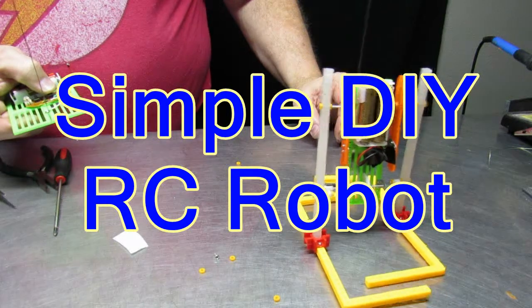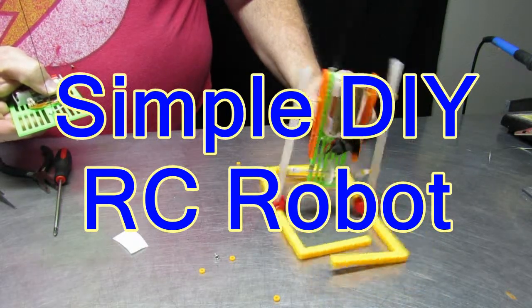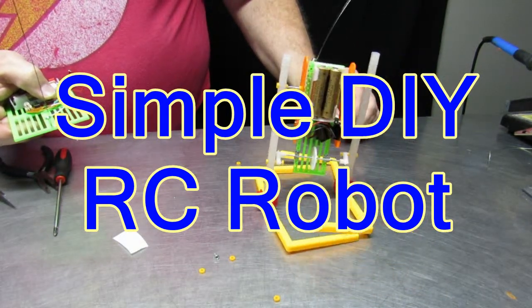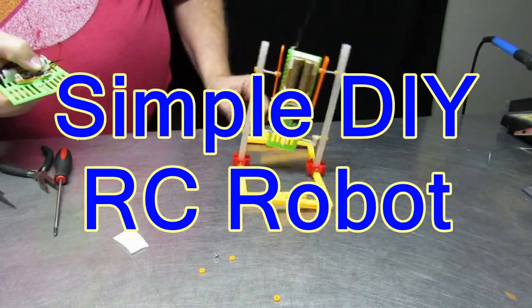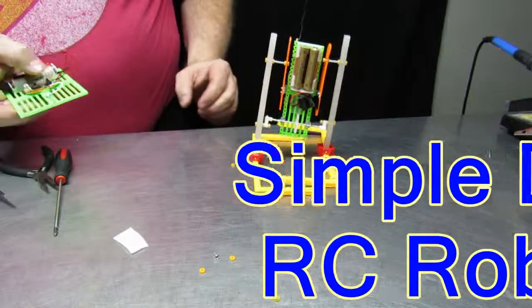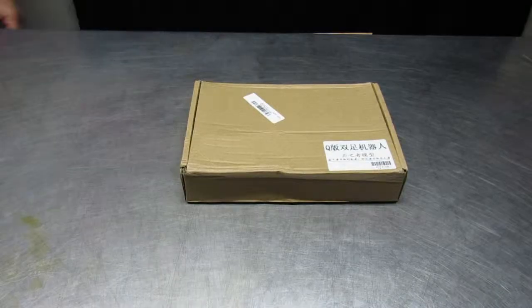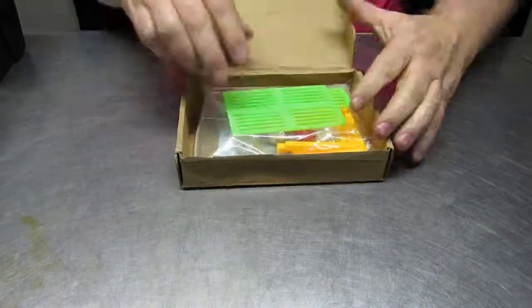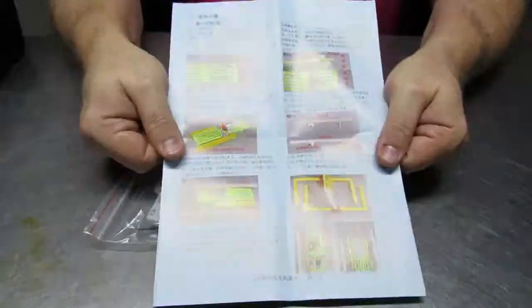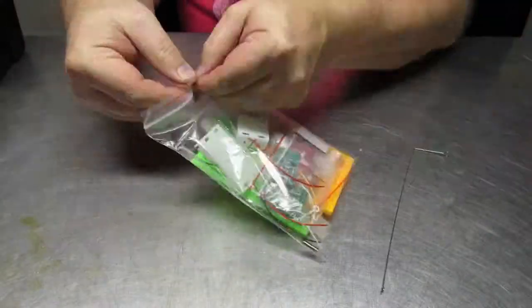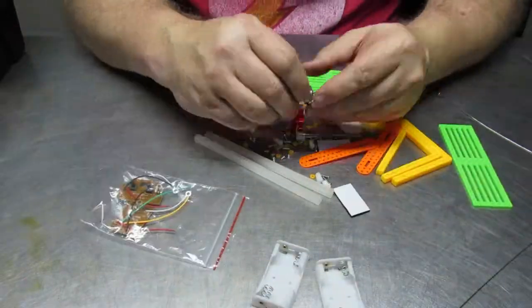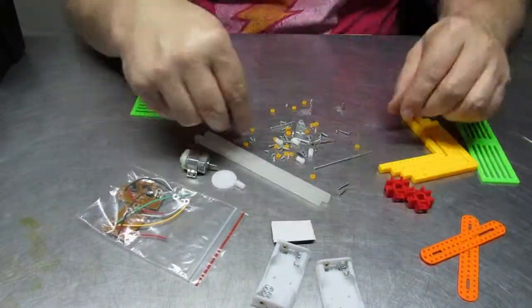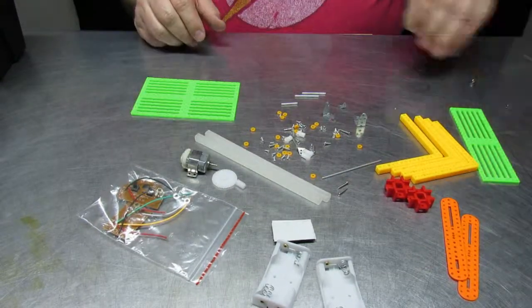Today's two minutes of science is all about a very simple do-it-yourself remote control robot. This kit was purchased from a mail order house from China, and as you'll see, the instructions are in Chinese but it does have pictures enough to let us build the robot without speaking Chinese or being able to read it. The pretty pictures are pretty self-explanatory, but I'll go through it step by step so you can see how to put it together.